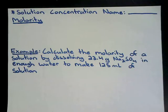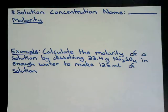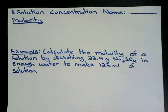Objective number seven: convert concentration in one unit into any other required unit, and also be able to incorporate density into those conversions. As you can see, there are quite a number of objectives, a lot of calculations, and a lot of definitions that we'll go over today.